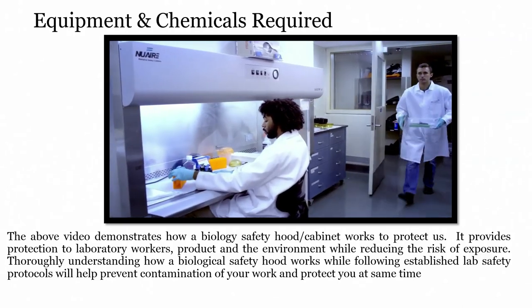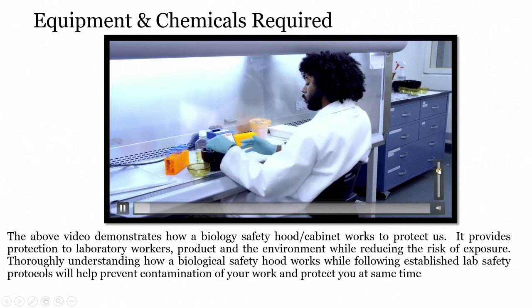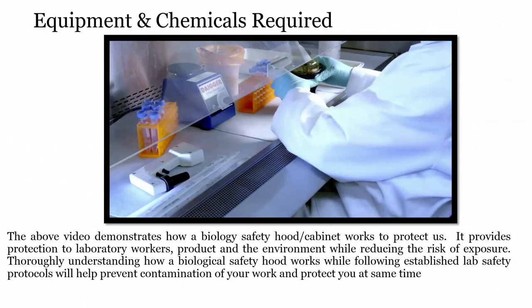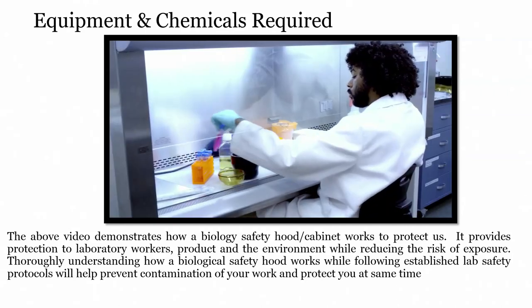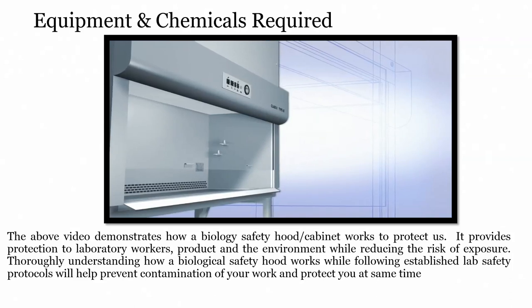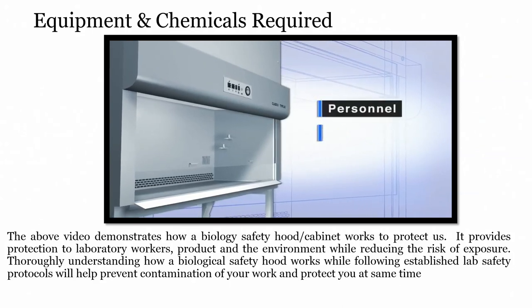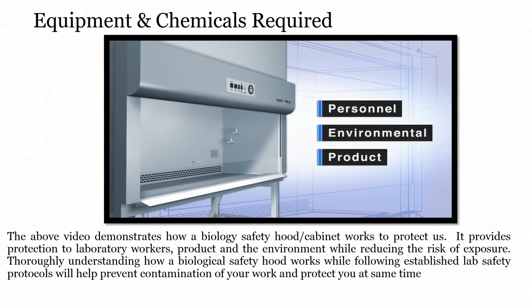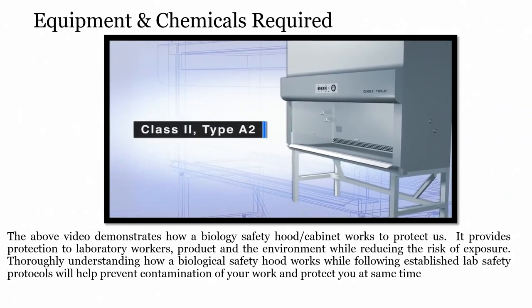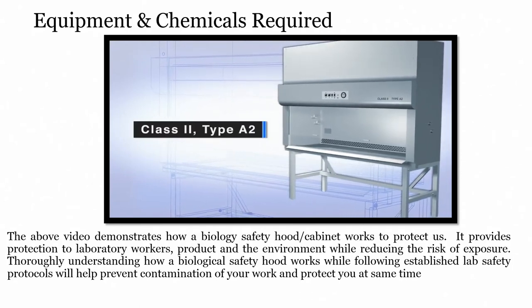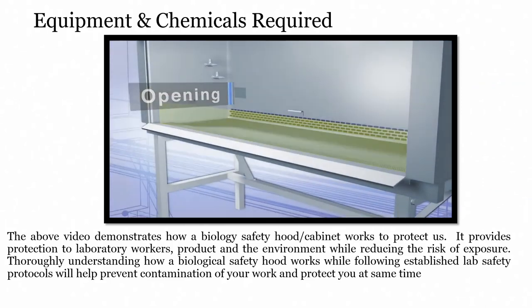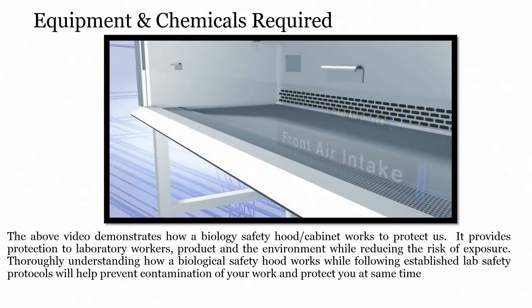This video demonstrates how biological safety cabinets work to protect you, providing protection to laboratory workers, product, and the environment while reducing the risk of exposure. Thoroughly understanding how a biological safety cabinet works while following established lab safety protocols will help prevent contamination of your work and protect you at the same time. When used correctly, a properly installed and certified biological safety cabinet provides personnel, environmental, and product protection for work with biological materials, including infectious agents and recombinant DNA. This video depicts a free-standing Class II Type A2 Biological Safety Cabinet, or BSC. It includes HEPA filters for exhaust and supply air, the work surface, the opening to the work surface, the airfoil, front and rear air intake grills, and the plenum.